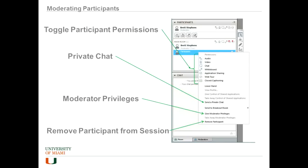In the participants list you can right-click on each person and toggle their permissions, which are also available as mouse-over permissions. You can change them for each individual user, or for the whole room. Everyone can have voice, video, chat, and whiteboard permissions. You may want to turn whiteboard permissions off — if you leave that on, students could start drawing distracting things all over your slides as you're presenting.